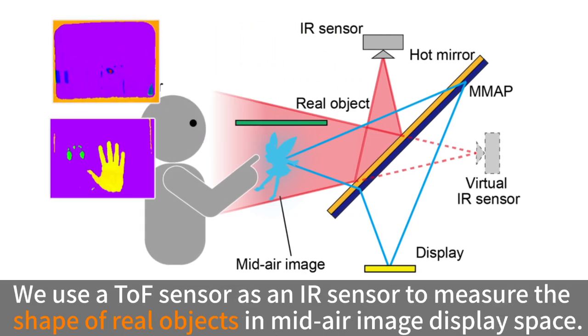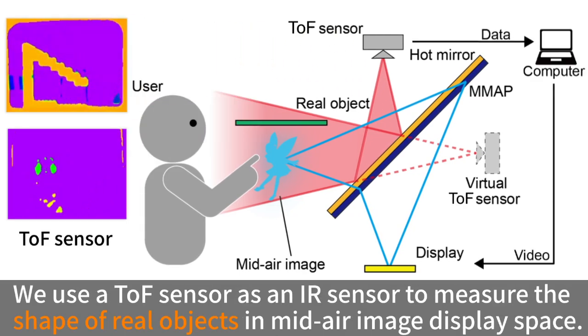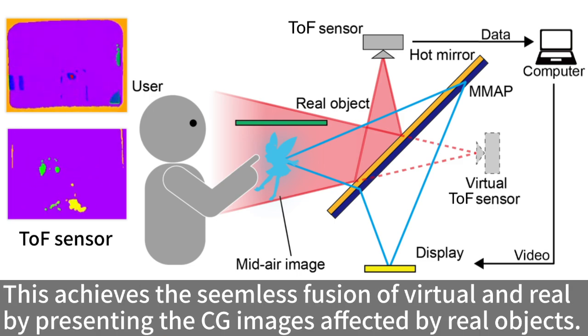We use a TOF sensor as an IR sensor to measure the shape of real objects in midair image display space. This achieves the seamless fusion of virtual and real by presenting the CG images affected by real objects.